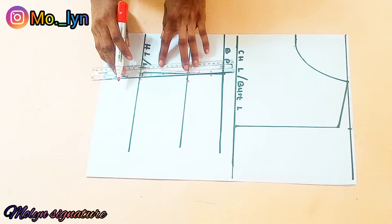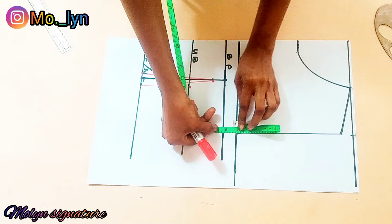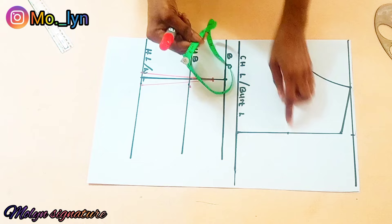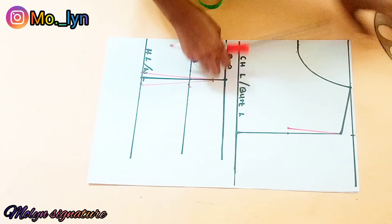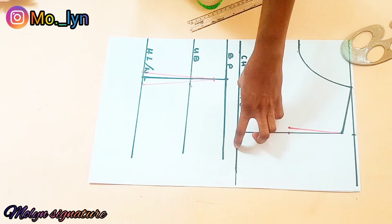Now the next thing I'll do is get half of my armhole measurement and mark that. From there I'll go outwards-inwards by half an inch and use my straight ruler to draw a straight line, then connect with my curved ruler towards this part. Now I'll be checking what I have for the chest line and inputting my quarter of my bust circumference.